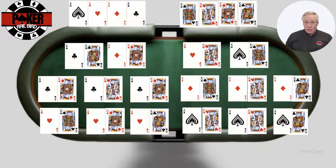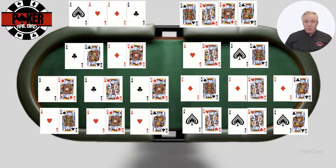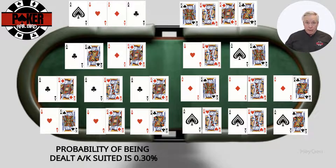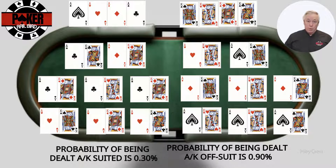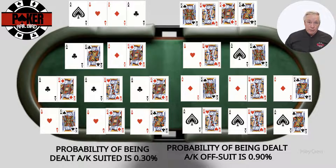Take Ace-King as an example, a famous starting hand. There are 16 total combinations of Ace-King — 4 Aces and 4 Kings. However, 4 of these combinations are suited, one for each suit, so we must deduct those, leaving us with 12 off-suit combinations. The probability of being dealt Ace-King suited is 0.3%, or about once every 331 hands. For Ace-King off-suit, the probability is 0.9%, or about once every 110 hands. When you combine the two, the probability of being dealt any Ace-King, suited or off-suit, is 1.2%, or about once every 83 hands.